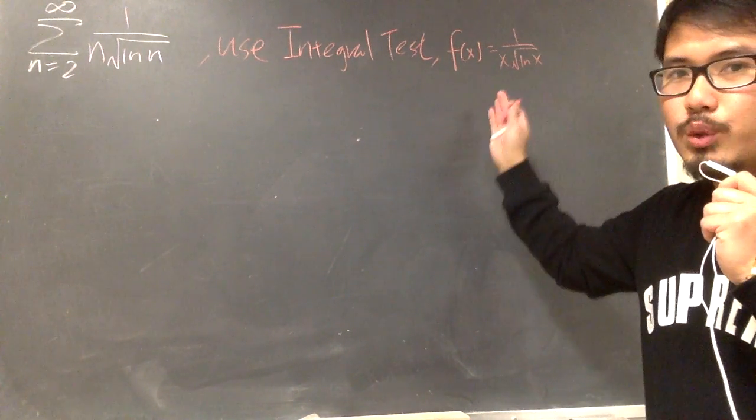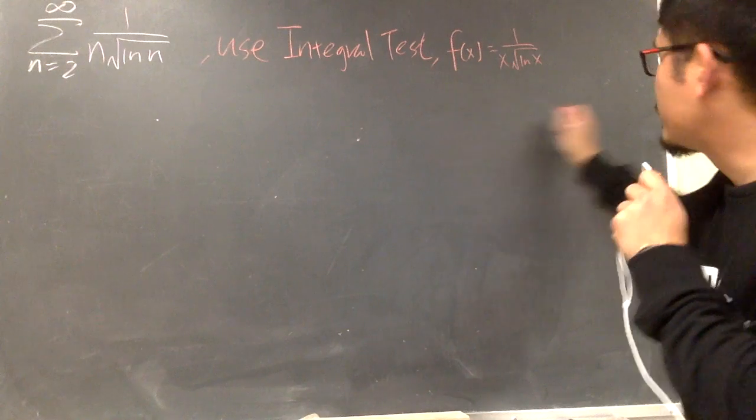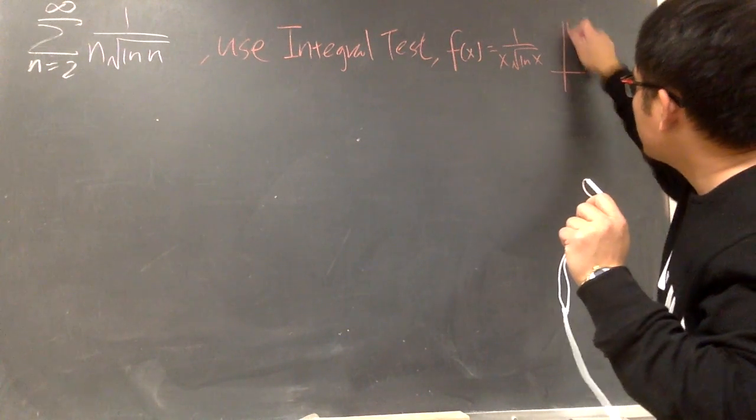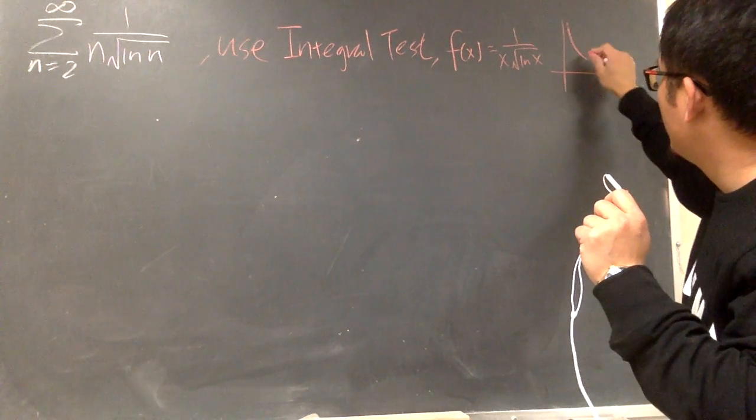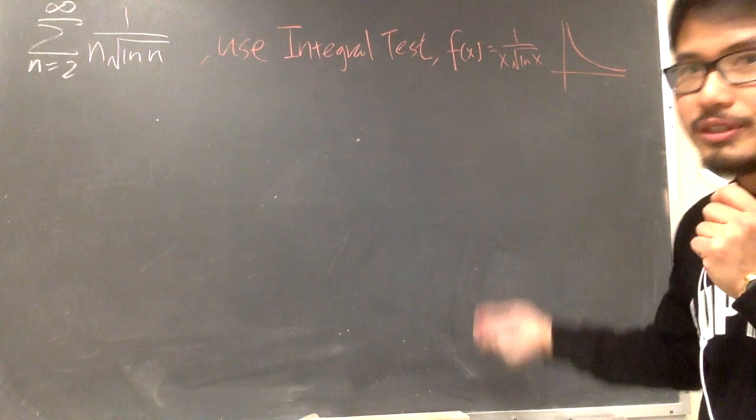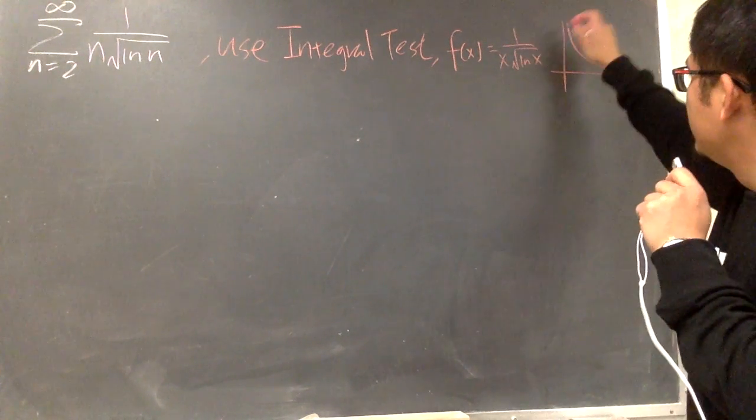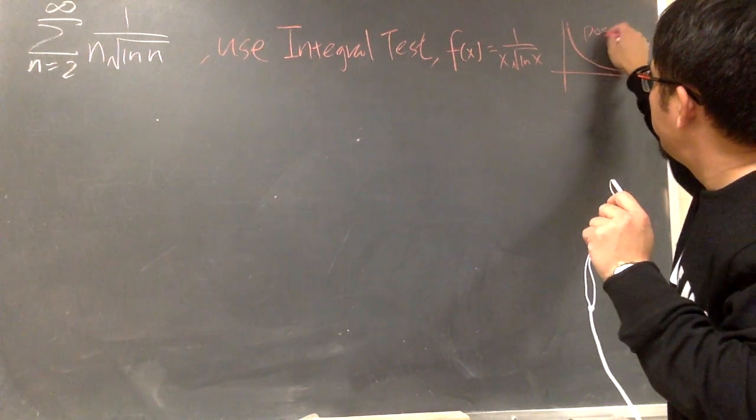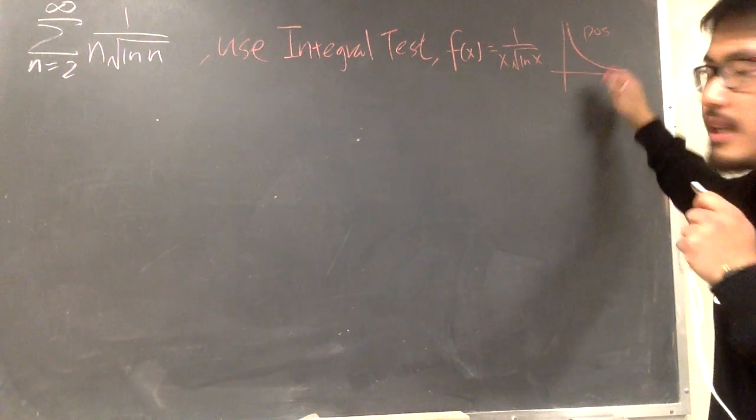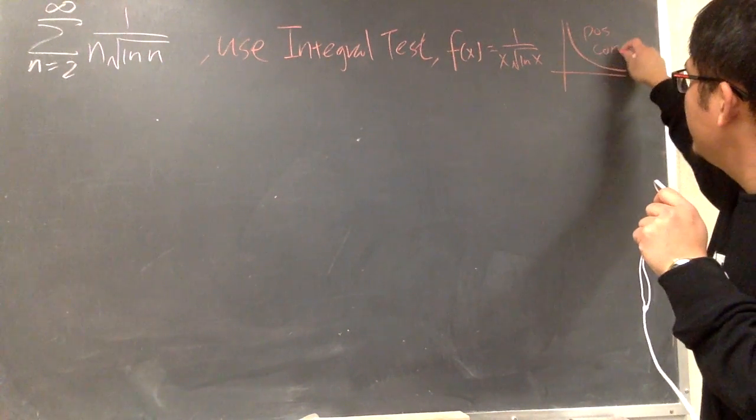And then in order for us to use the integral test, for this function, we have to make sure three things. You can do a graph and you can tell me the three things. First, this function is positive, meaning it's above the x-axis. And second of all, it's continuous, right?